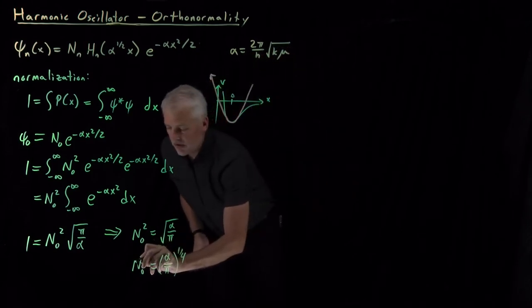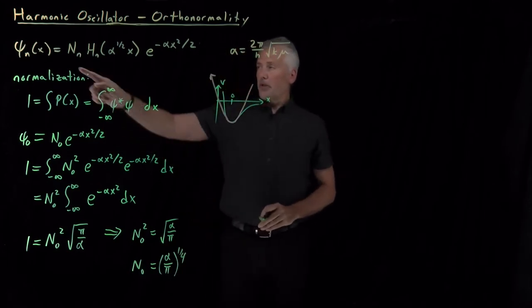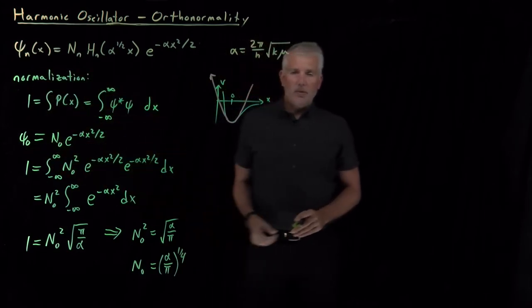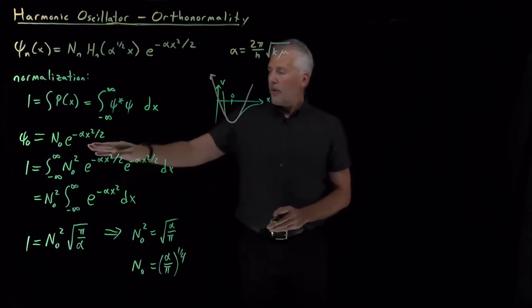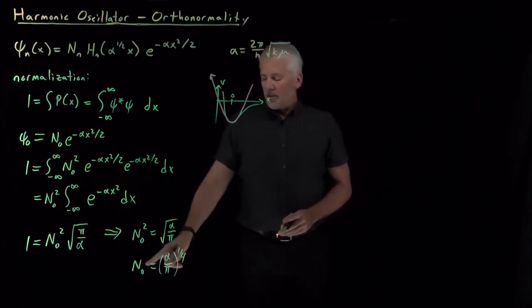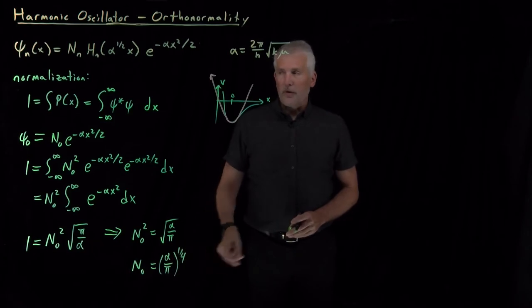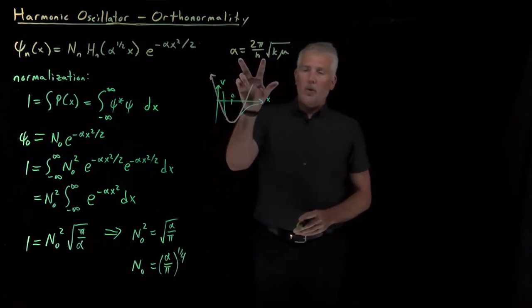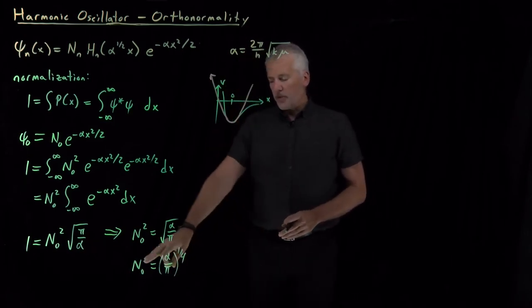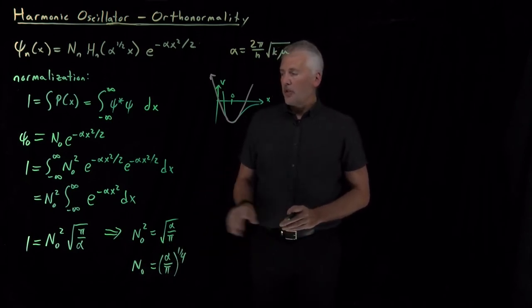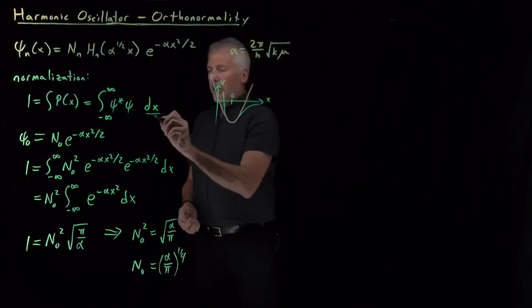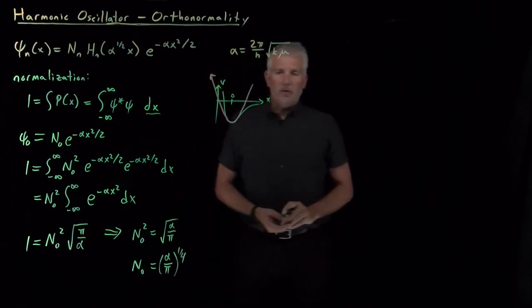So that's the normalization constant. If we really care about the full details of the n equals zero wave function, the value of this N₀ normalization constant is the fourth root of alpha over pi, where alpha is this collection of constants. Often we don't particularly care about those values, but when you do, here's how to do the normalization — the variable we integrate over and the ranges of that integral.